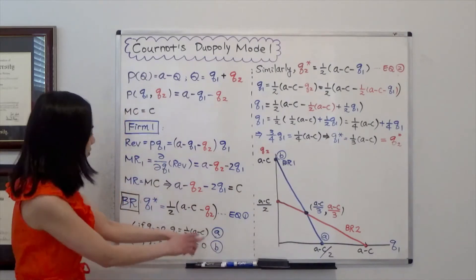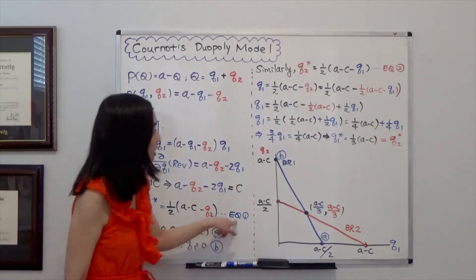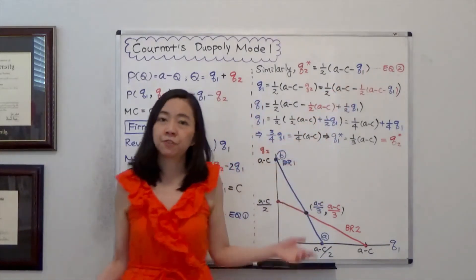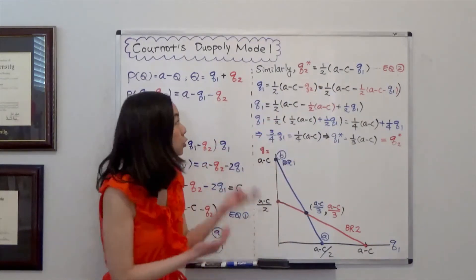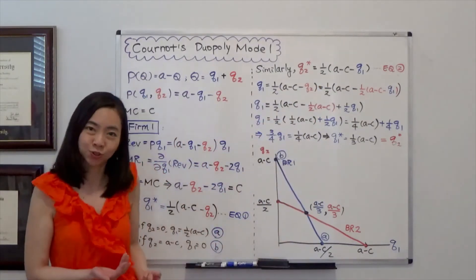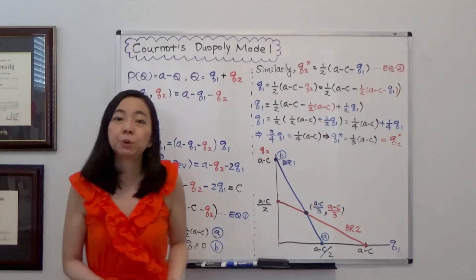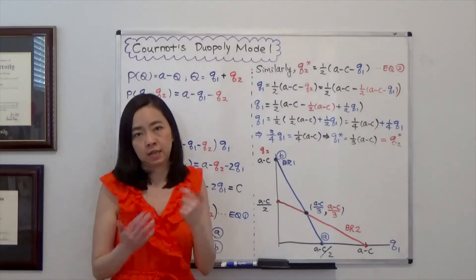And with equation 1 and equation 2 that's the best response function for firm 1 and firm 2. We have two equations in two unknowns. That means we'll be able to solve for Q1 and Q2.